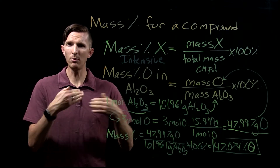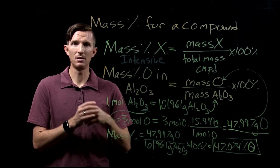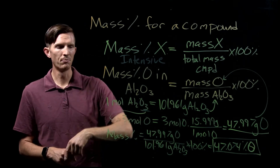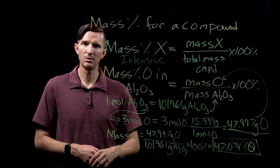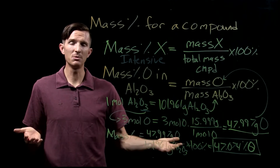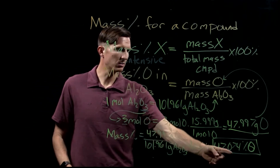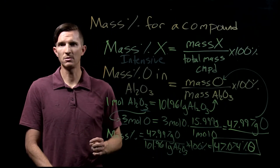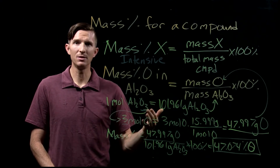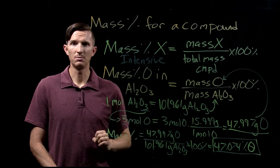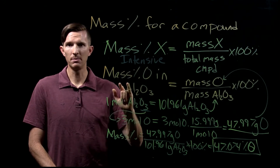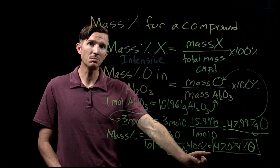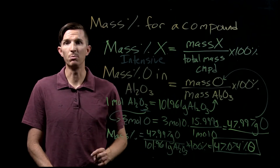In our previous video we looked at mole ratios, which gives us the ability to relate molar amounts of aluminum to oxygen. But mass percent gives us the ability to relate mass amounts. So if I had 100 grams of aluminum oxide, I know 47.074 percent of that is oxygen — meaning I'd have 47.074 grams of oxygen. And again, this is an intensive property, so it doesn't matter if I have one gram or 100 grams — the mass percent of oxygen would still be 47.074 percent.